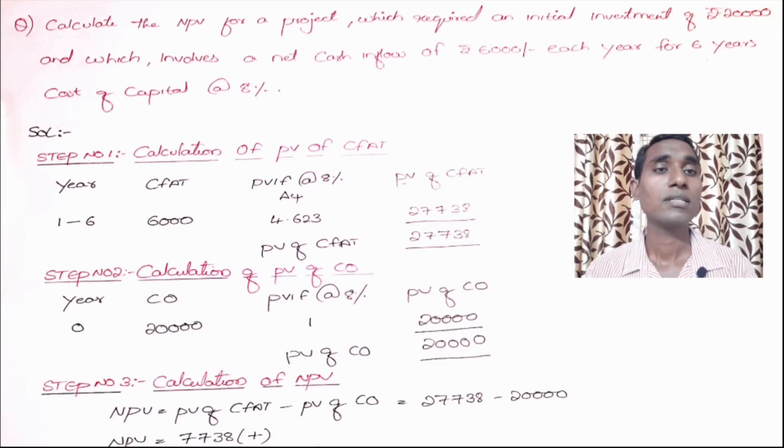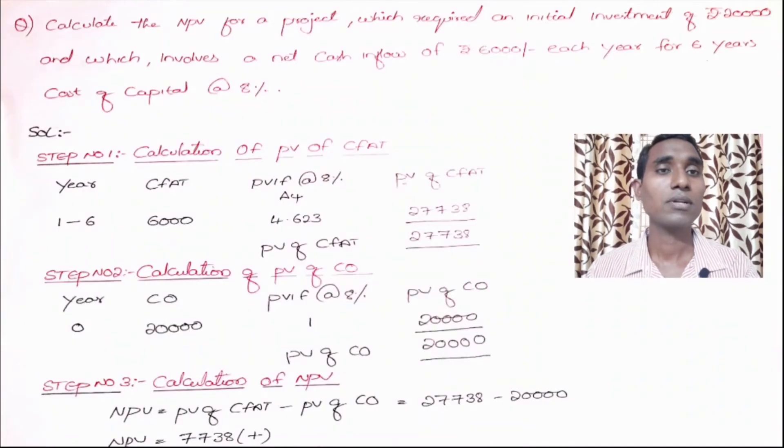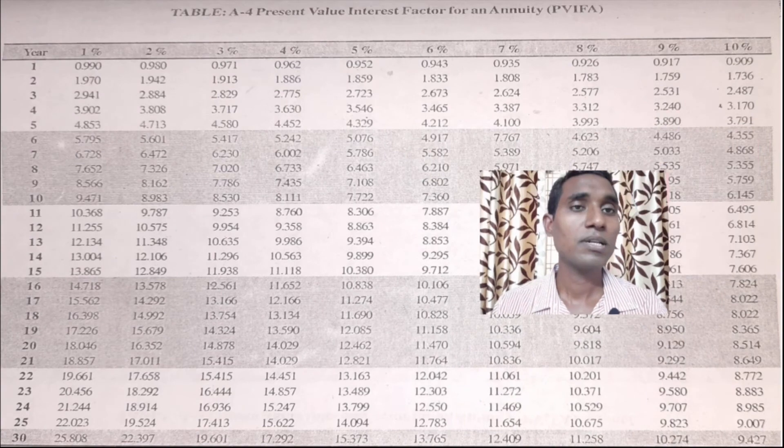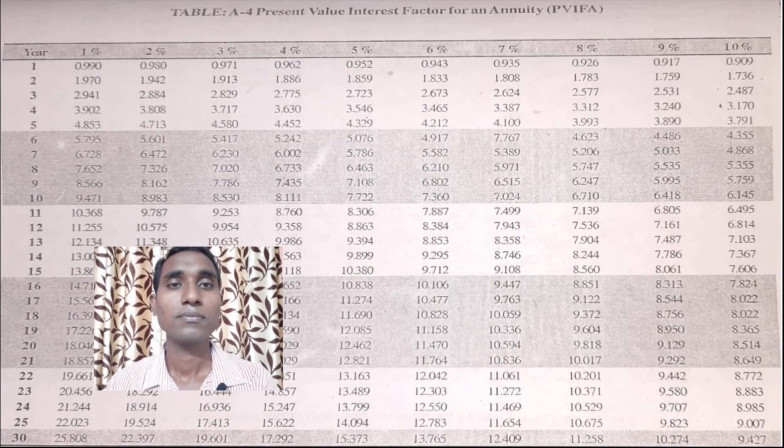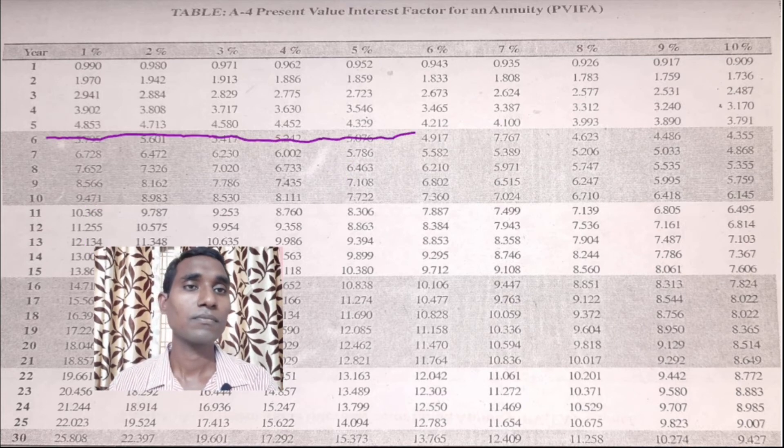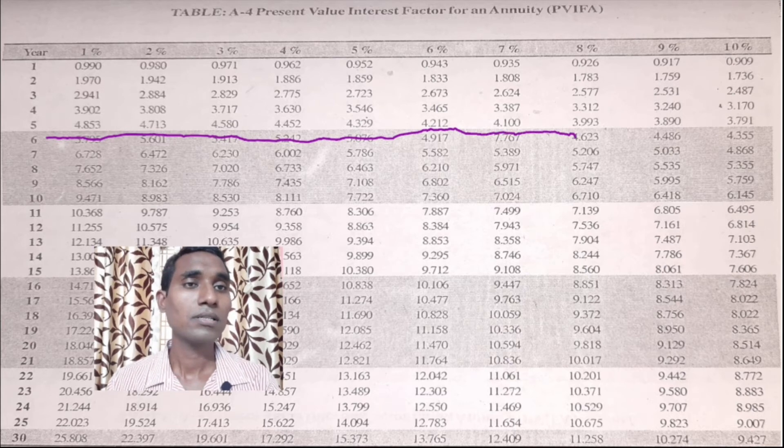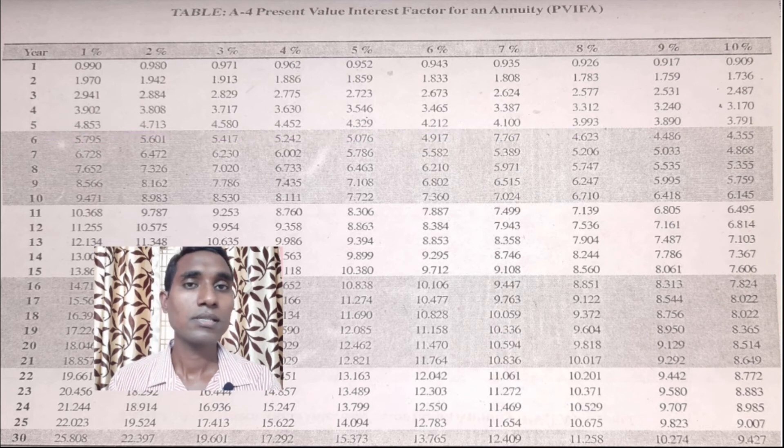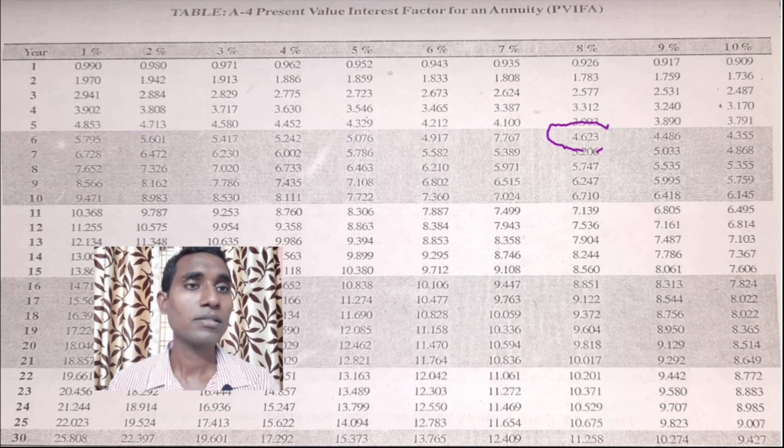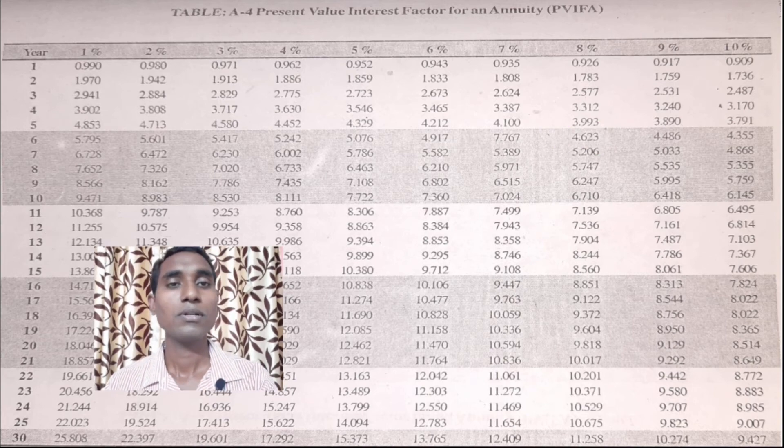This is the A4 table, 8%. Here you can see 8%, so in the A4 table at 8%, sixth year, it is 4.623.